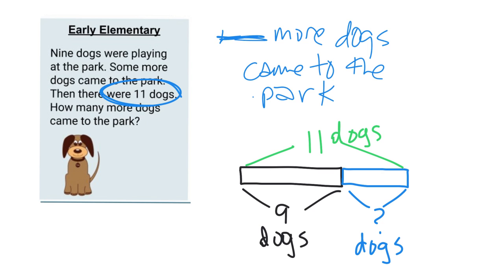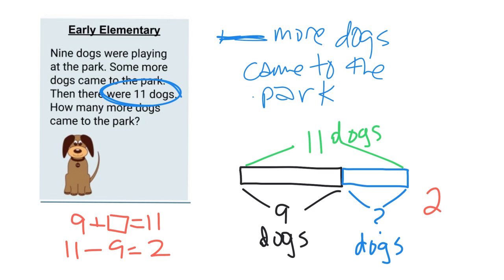If we want students to do the work, they might write nine plus what equals 11, or they might do 11 minus nine, which equals two. So the answer is two dogs — we put two more dogs came to the park.